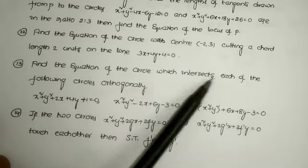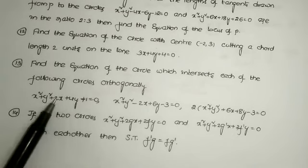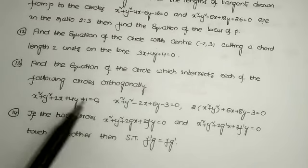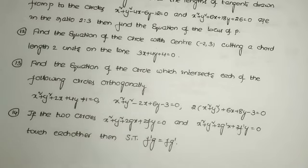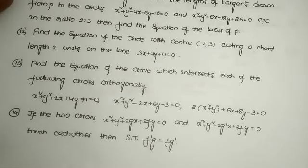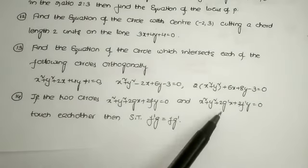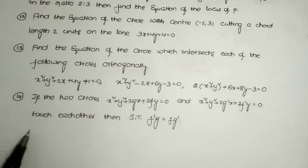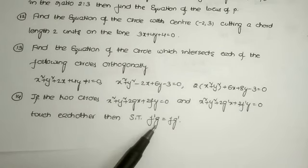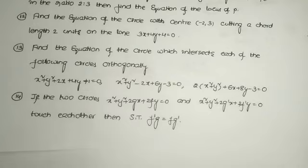Question 13: find the equation of the circle which intersects each of the following circles orthogonally — x² + y² + 2x + 4y + 1 = 0, x² + y² − 2x + 6y − 3 = 0, and 2x² + 2y² + 6x + 8y − 3 = 0. Question 14: if the two circles x² + y² + 2gx + 2fy = 0 and x² + y² + 2g'x + 2f'y = 0 touch each other, then show that f·g' = f'·g. These are problems from the topic system of circles.